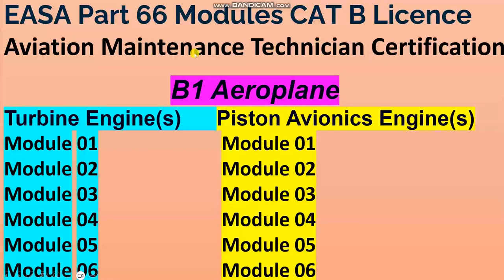Okay, technician for maintenance B1 — airframe and engine airplane, not helicopter, airplanes only. Here: turbine engines and piston engine. How many modules for each one? Look here: module one, module two, module three, module four, module five, module six.